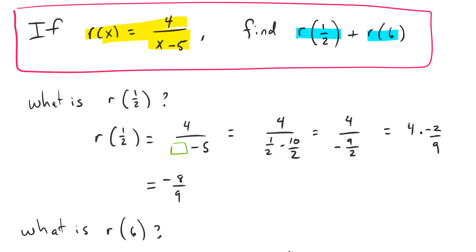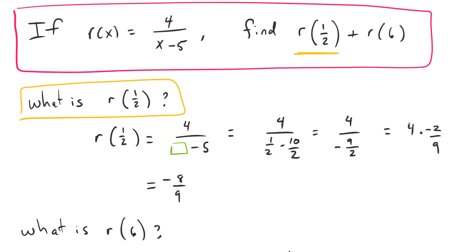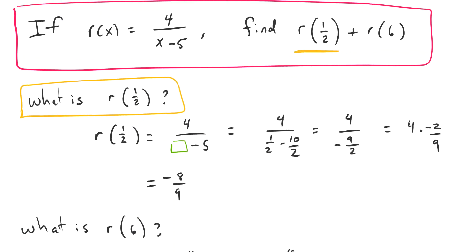Well our first question is: what is r of 1 half? We want to figure out what that is, so let's do that right here. If we have r of 1 half, that means we just take 1 half and plug it in everywhere there was an x. Notice our only place there was an x was in the bottom.